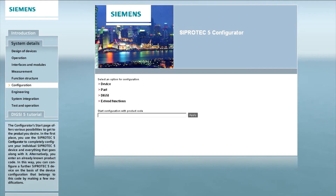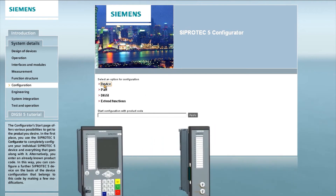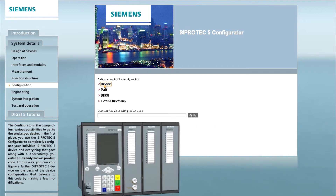The configurator's start page offers various possibilities to get the product you desire. As a start, you use the CPOTEC 5 configurator to completely configure your individual CPOTEC 5 device and everything that goes along with it. Therefore, we select as option: device.